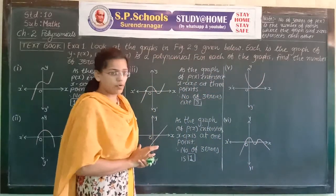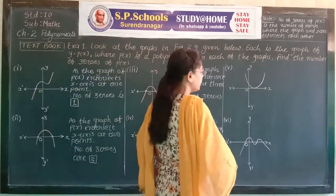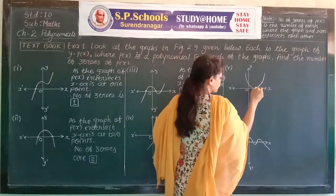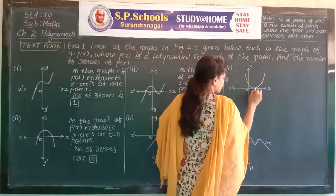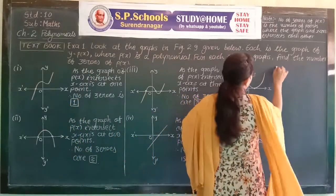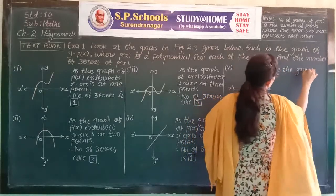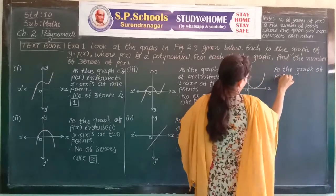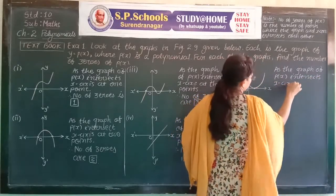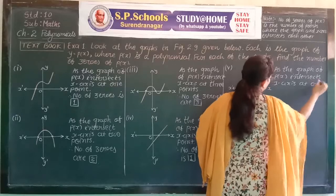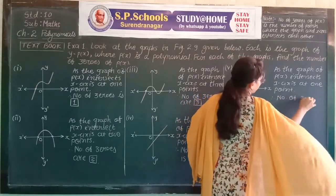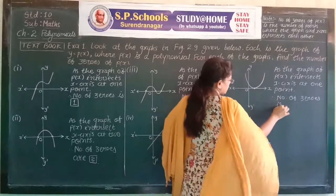Now the fifth number. Again, this is the curve called a parabola — upward — representing the quadratic polynomial. The x-axis, y-axis are shown. This is the graph of y = P(x), and it intersects the x-axis at a single point. That's why it contains only one zero. As the graph of P(x) intersects the x-axis at one point, therefore the number of zeros is only one.